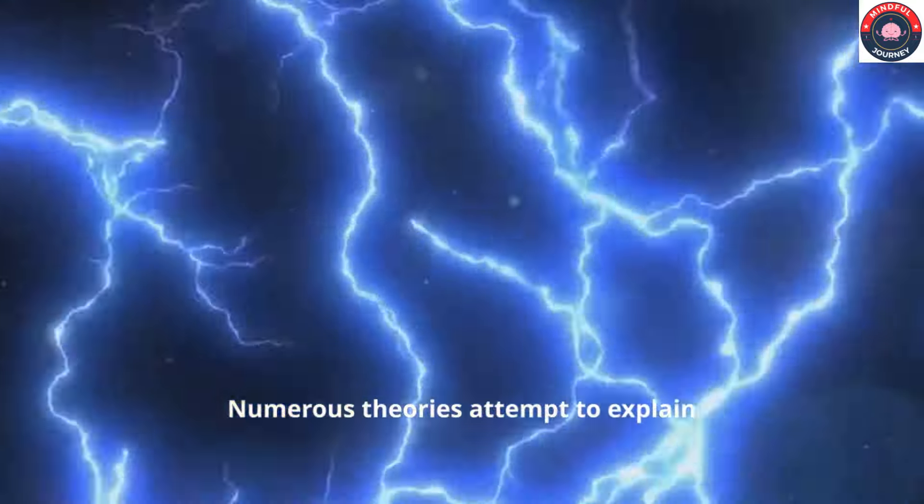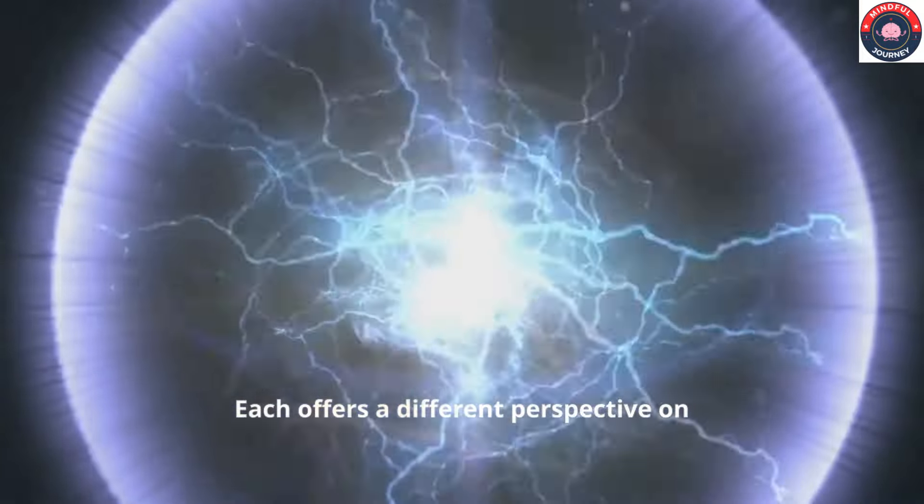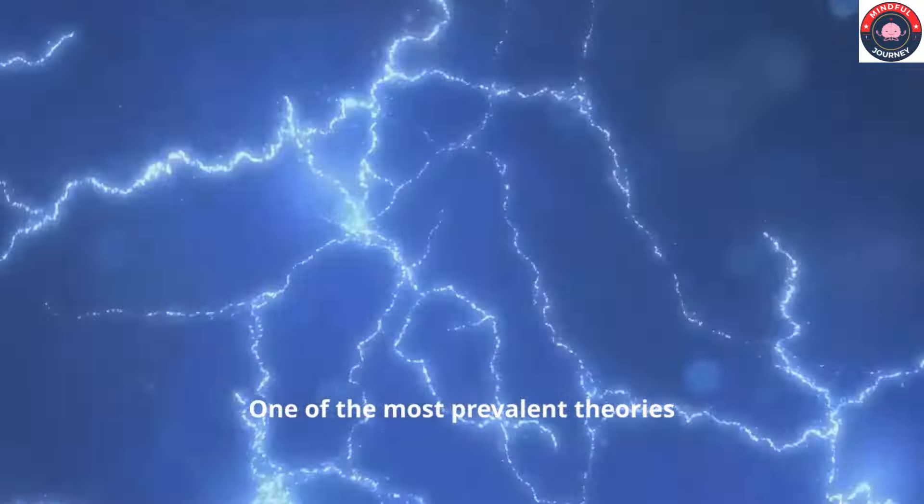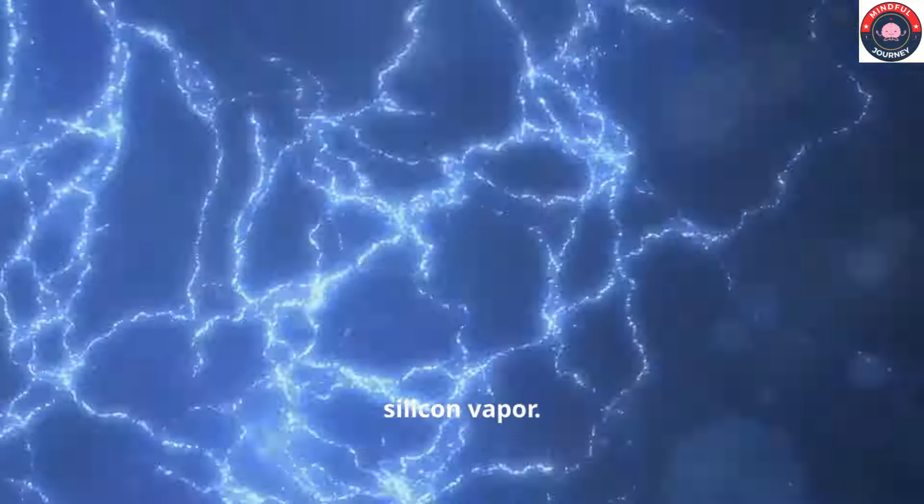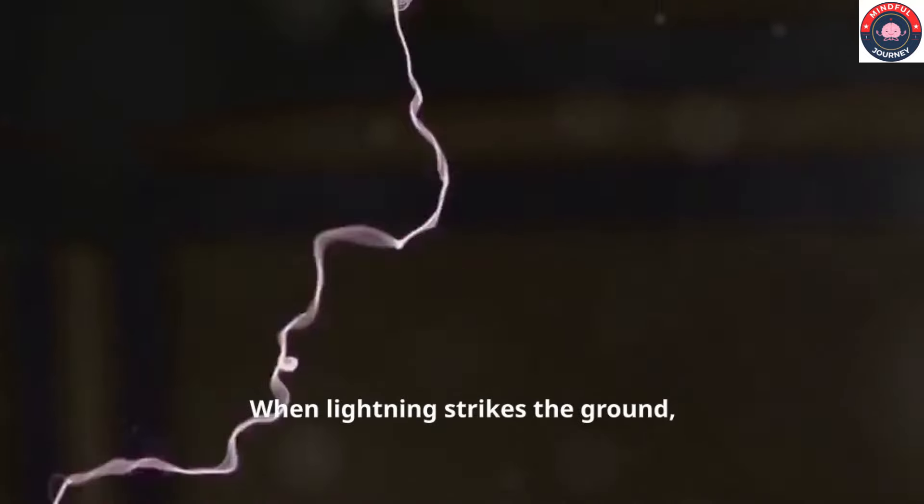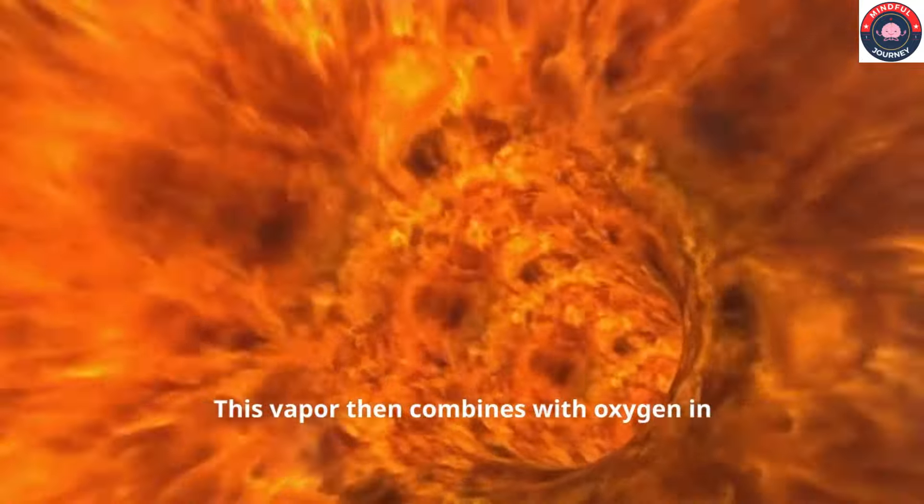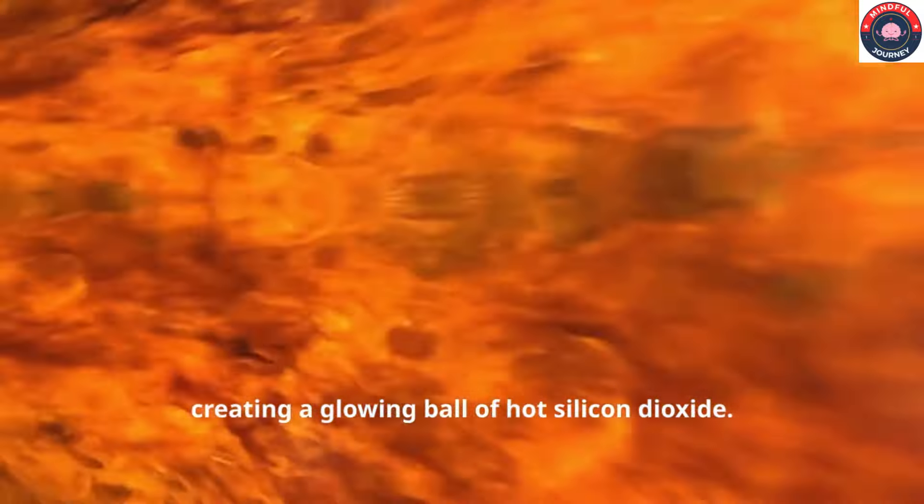Numerous theories attempt to explain the formation of ball lightning. Each offers a different perspective on this enigmatic phenomenon. One of the most prevalent theories suggests that ball lightning is created by silicon vapor. When lightning strikes the ground, it vaporizes silicon in the soil. This vapor then combines with oxygen in the air, creating a glowing ball of hot silicon dioxide.